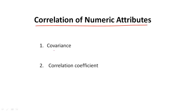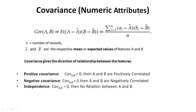Correlation of numeric attributes can be calculated using covariance and the correlation coefficient. If you understand the formula for covariance, it is easy to understand the correlation coefficient. The covariance of numeric attributes is given by the equation: summation from i equal to 1 to n of (a_i minus a-bar) times (b_i minus b-bar), divided by n.